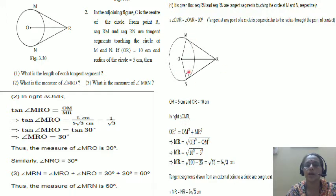In triangle MOR, what do you have? OR squared is equal to OM squared plus MR squared. Find out the value of MR, which is 5 root 3. Tangent segments from an external point are of the same length. Therefore, NR is also 5 root 3.